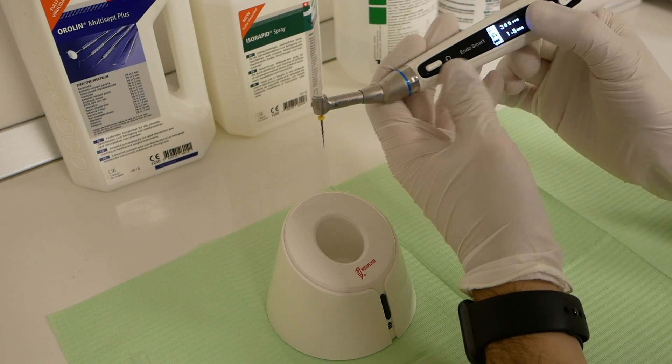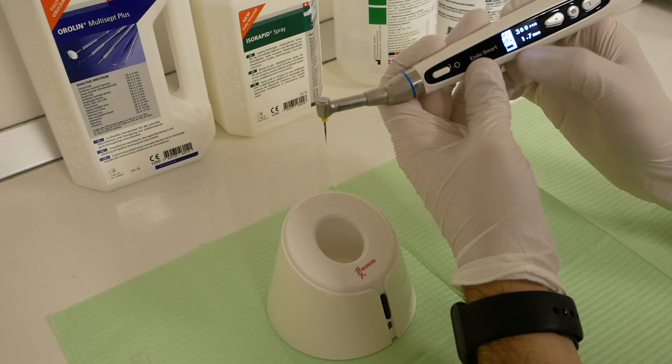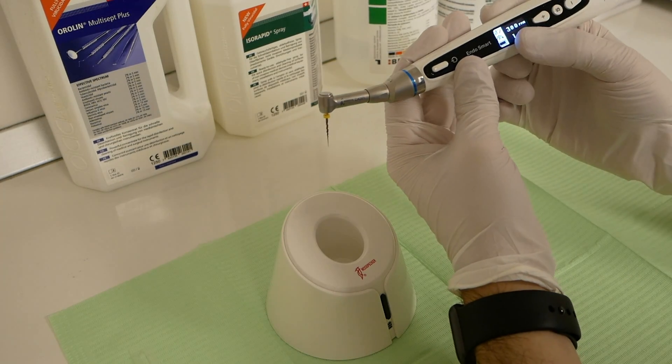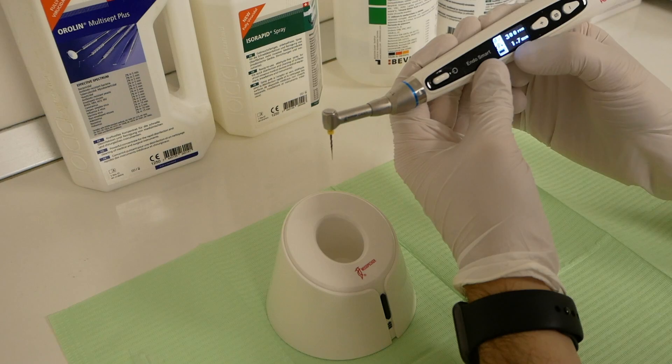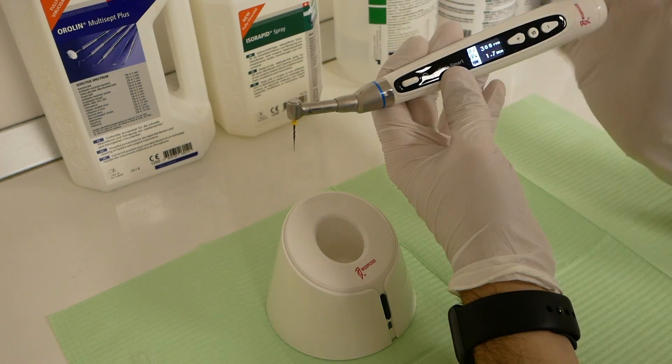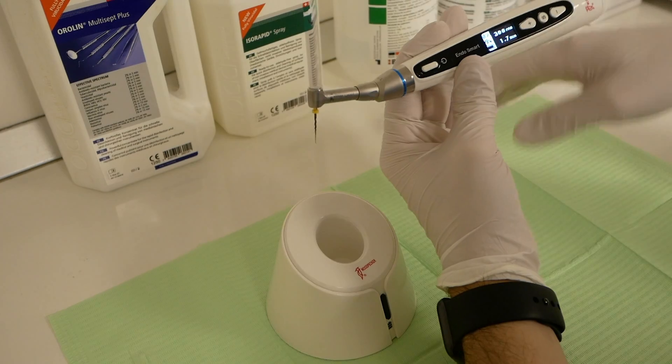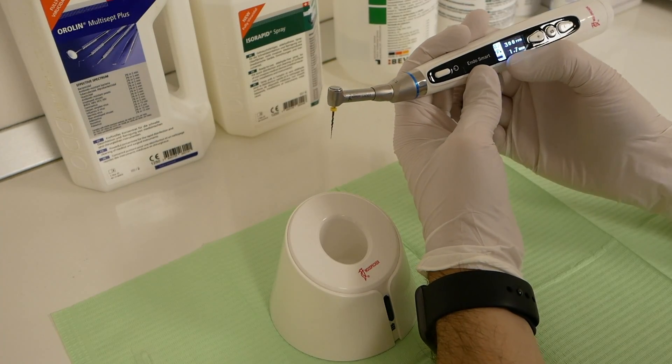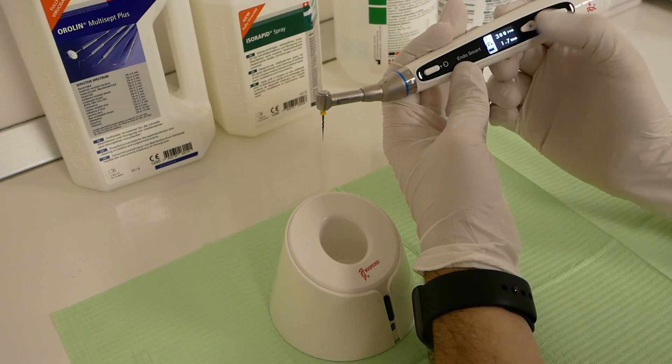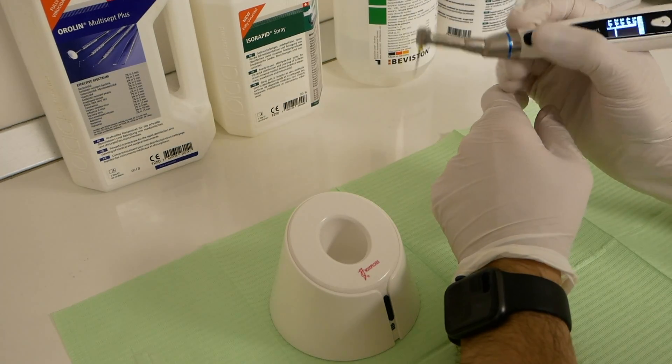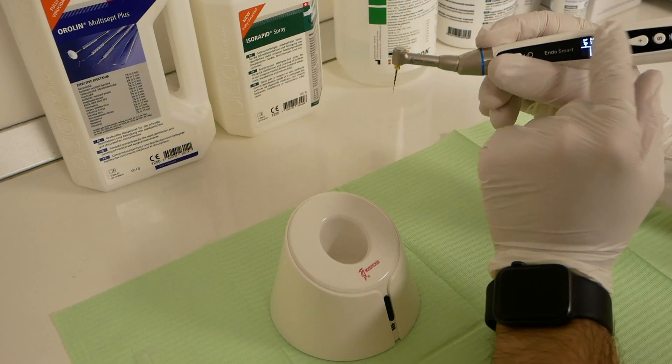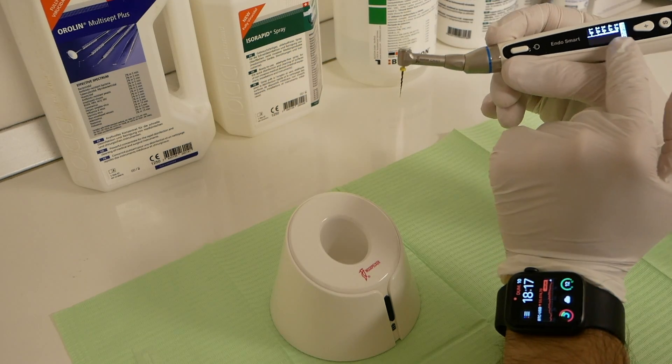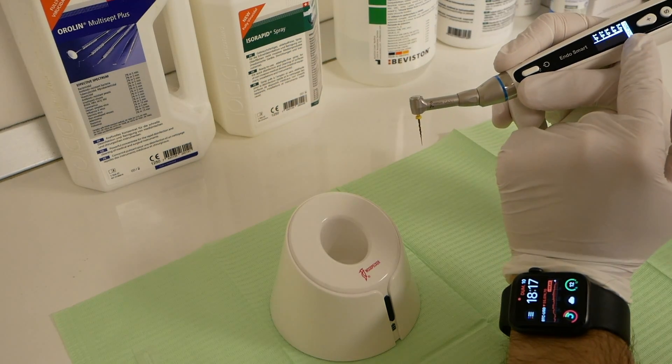And then you'll just select the program with the rotations per minute you require for the file you selected, and the torque, and also the movement. It supports normal rotation or reciprocation. You just activate it. When the file is working, you will see the live values of your torque.